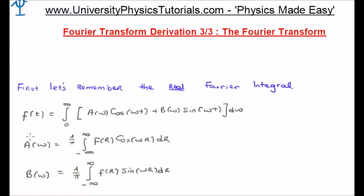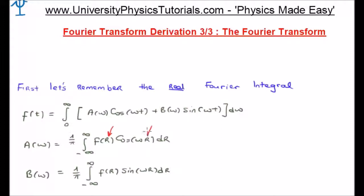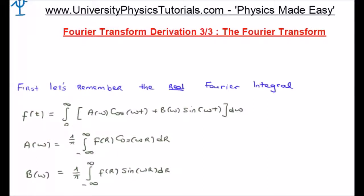Now let's look at the coefficients a of omega and b of omega. We are integrating with respect to what I call a dummy variable r, when of course it should be t just like the initial function, but I said at the start that it was good practice to utilize this dummy variable and that without it we could never derive the Fourier transform. Looking at this integral in more detail, this input function small f of r is being transformed to a function of omega because we are integrating out the r dependence. The traditional way of writing this is capital F of omega rather than a of omega.